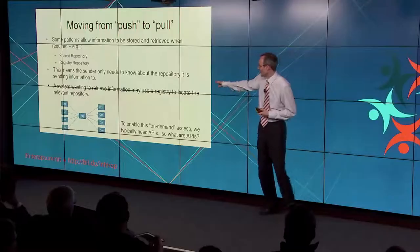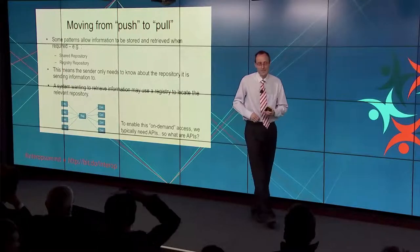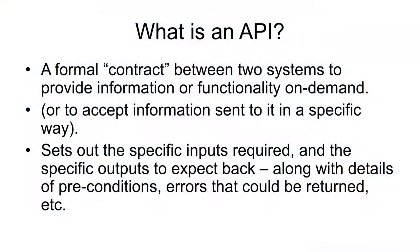When you start moving towards pulling information on demand, that requires that the places you want to pull from have the ability for you to do so — and that brings us back to the acronym APIs. An API is a formal contract between two systems for how information can be shared or retrieved. It's the formal definition of: here's what you need to give me, here are the prerequisites — you've got to have verified the identity of that person first — here's the sorts of things that could go wrong, and here's exactly what you're going to get back — all linked in with the information modelling we talked about.